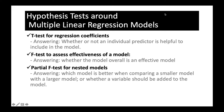Hi everyone. In this video we will talk about hypothesis tests around multiple linear regression models. The first one is called the t-test, which is for testing individual regression coefficients — specifically whether an individual predictor is helpful to include in the model. The second is the f-test, for checking the model as a whole — whether the model overall is effective. The third is the partial f-test, used for checking which model is better: a smaller or a larger model.